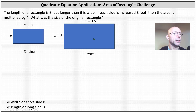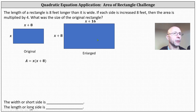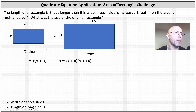The area of the larger rectangle is four times the area of the smaller rectangle. The area of the small rectangle is equal to length times width, or in our case, x times the quantity x plus eight. And the area of the enlarged rectangle is the quantity x plus eight times the quantity x plus 16. The area of the larger rectangle is four times the area of the smaller rectangle, which means if we multiply the area of the smaller rectangle times four, we can set the two areas equal to each other.